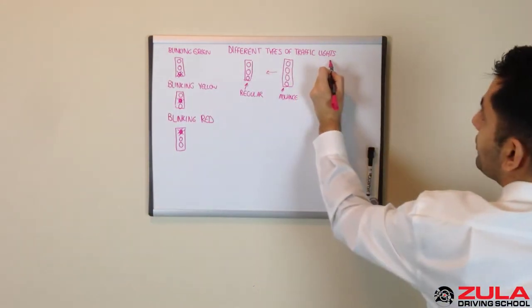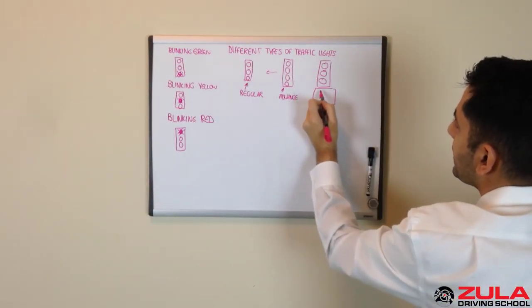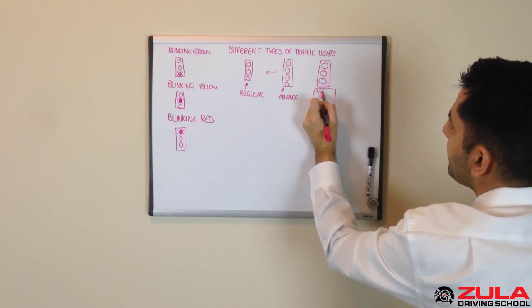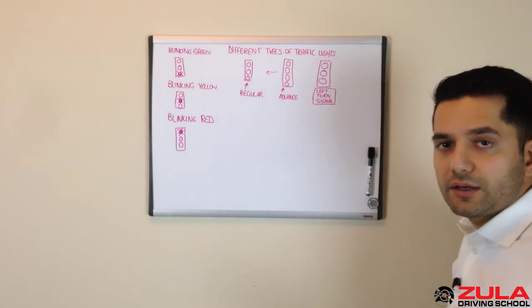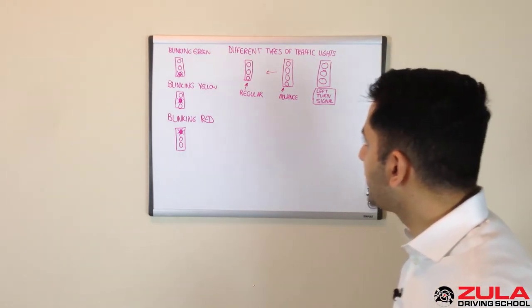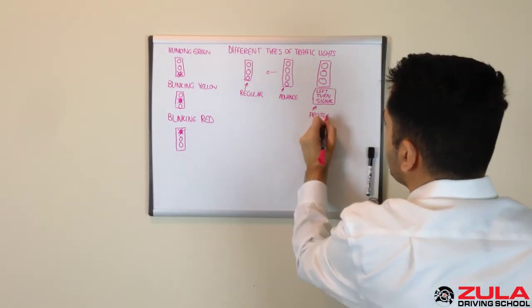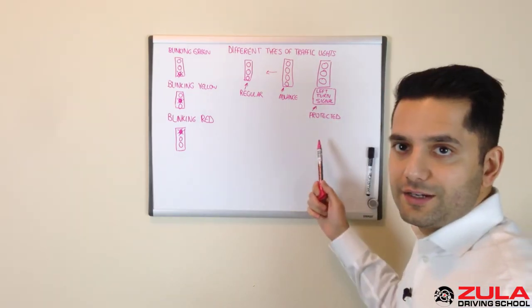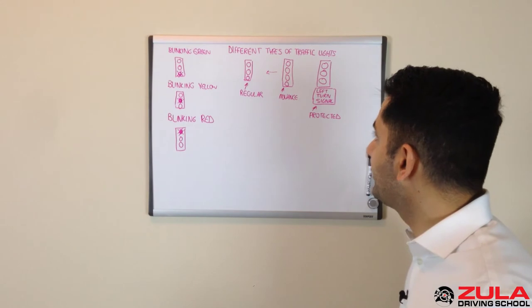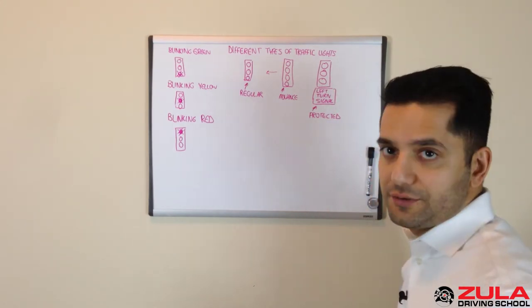Then you also have what looks like a regular intersection light but it says left turn signal or right turn signal depending on what kind of turn it is. These ones we call the protected, so this would be a protected left. These lights are the easiest ones to make a turn at because you can only make a turn when this light tells you that you can.